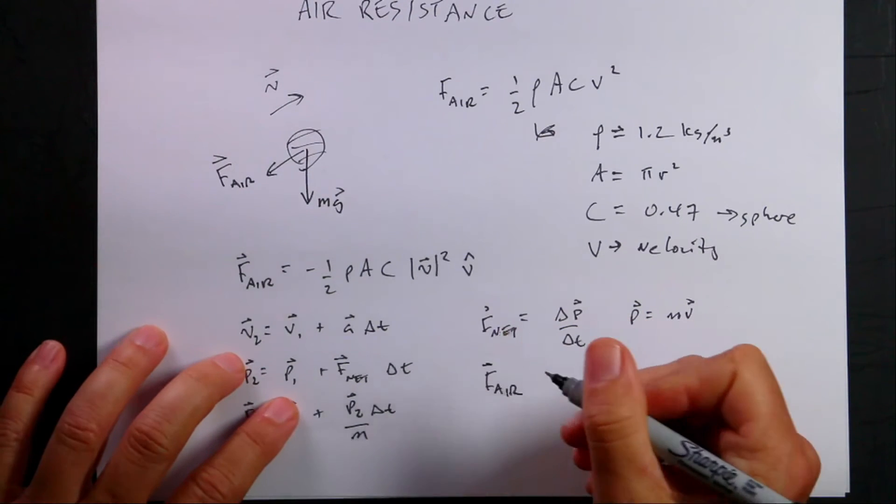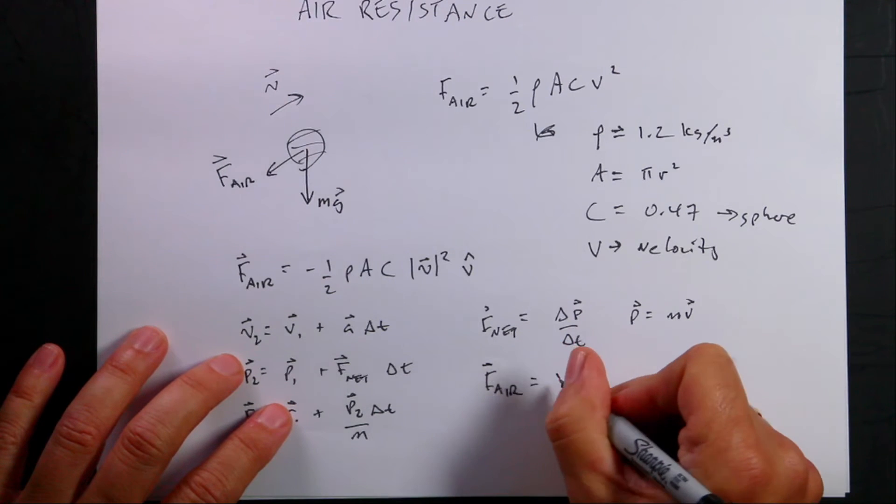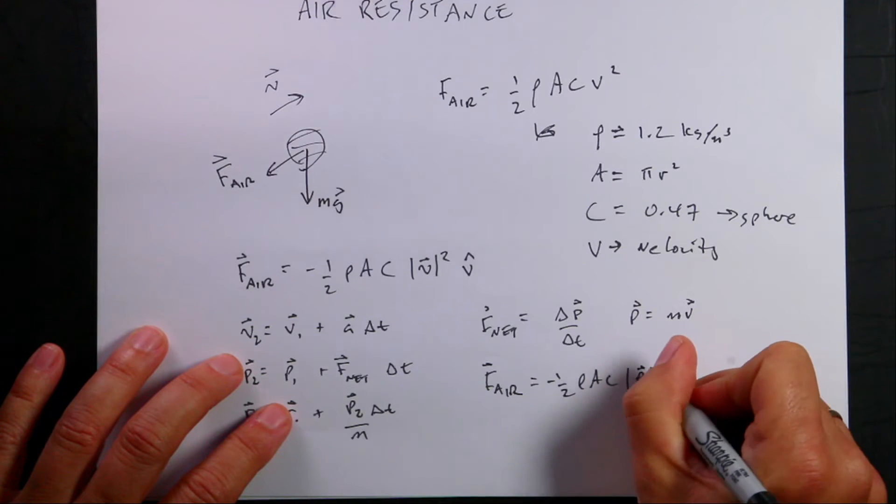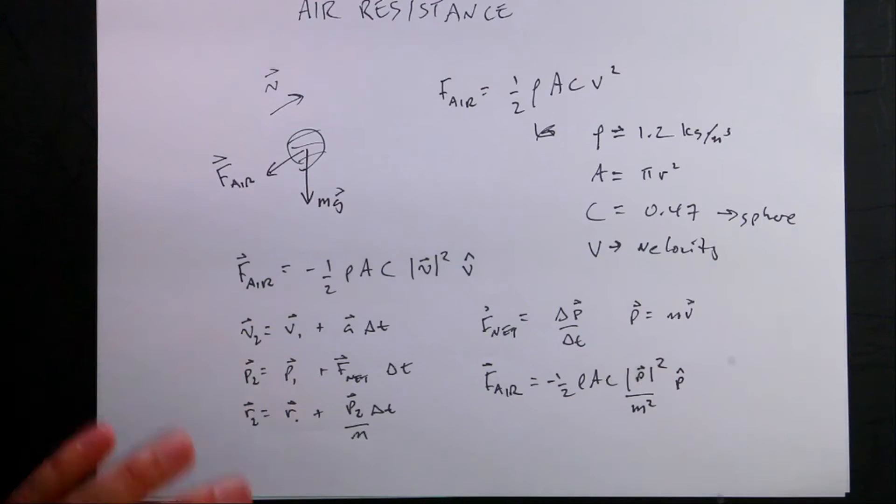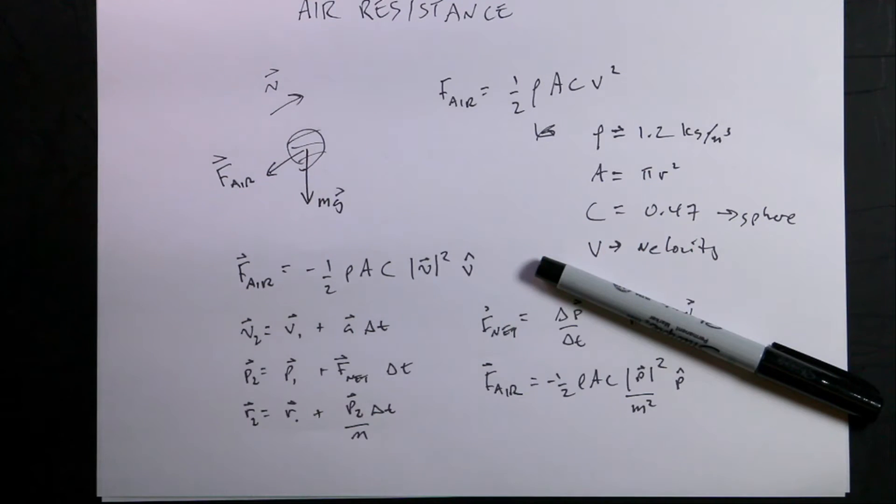And I can write F_air, you can either solve for the velocity, which I probably will do. Or I can write negative one-half rho A C p squared over m squared times p hat. p hat is the direction of the momentum, which is the same as the direction of the velocity. Okay. So let's go back to the program and make some modifications, add this in here and see if we can get that to work. In fact, I think I'm going to add another ball. If I have two balls, I can see one with air resistance and one without.